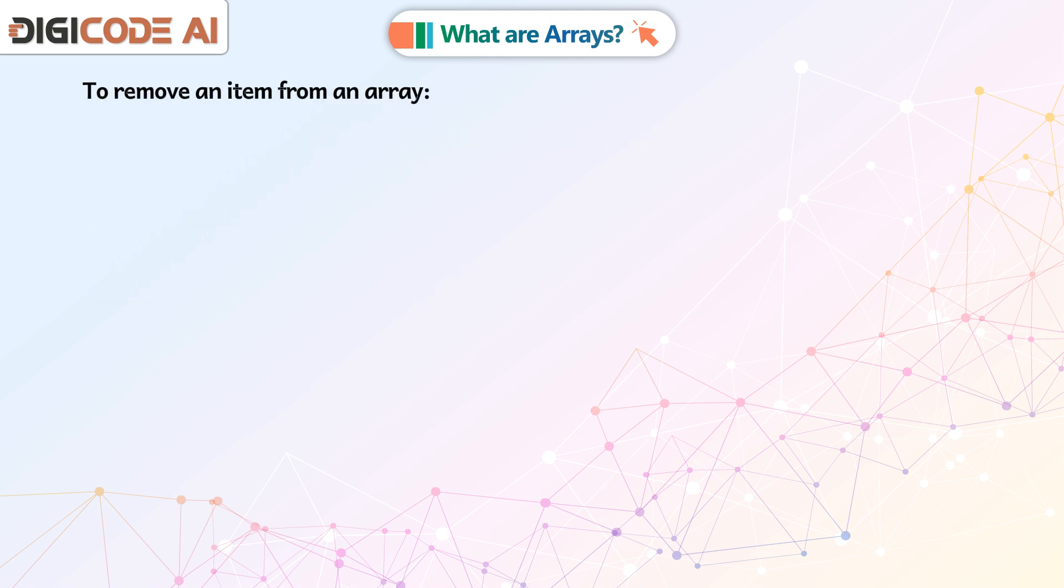To remove an item from an array, pop is a method to remove an element from an array. Colors = ['red', 'green', 'blue']. Colors.pop(1). Print(colors).